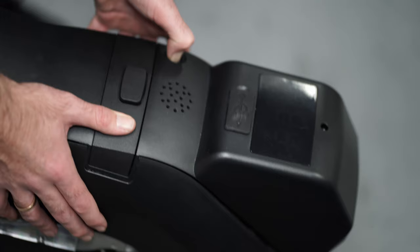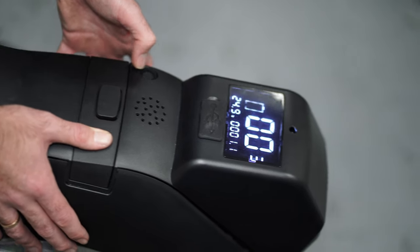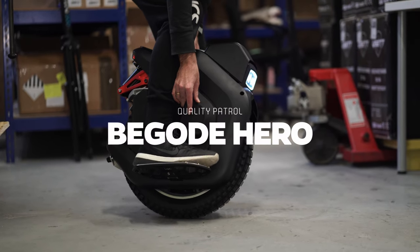Hello, this is Ikolka. Today we will take a look at this new electric unicycle with the suspension named the Begoad Hero.